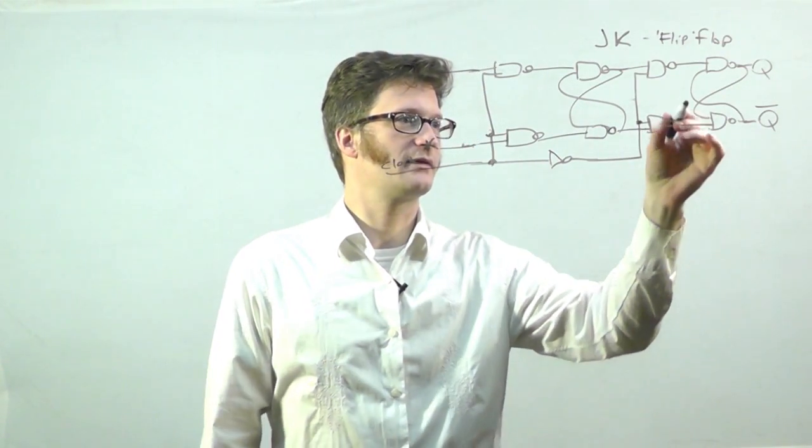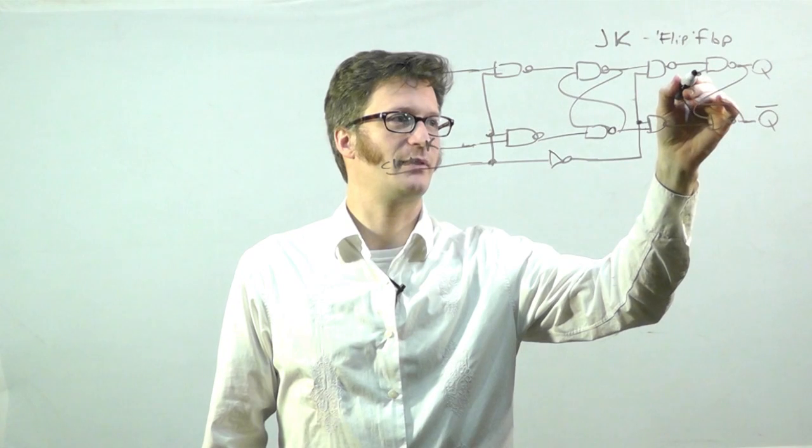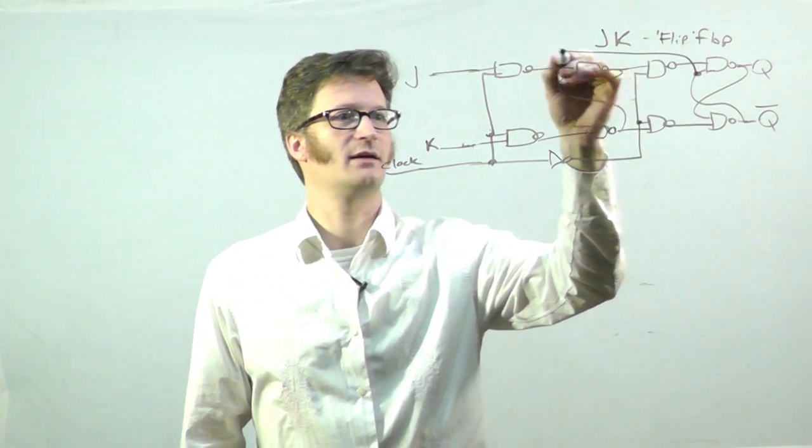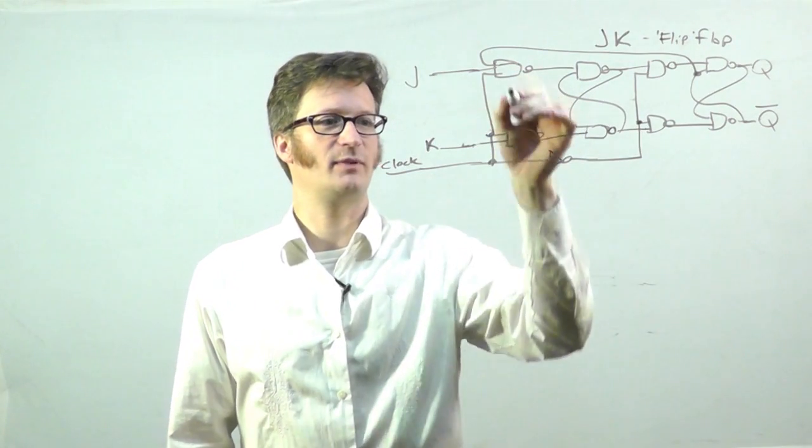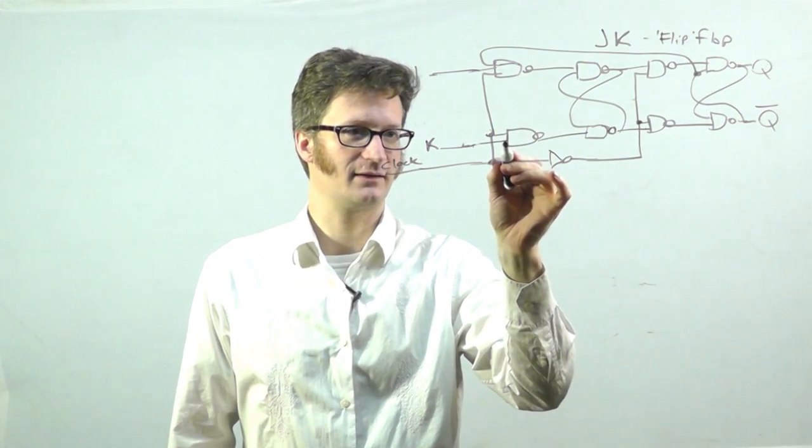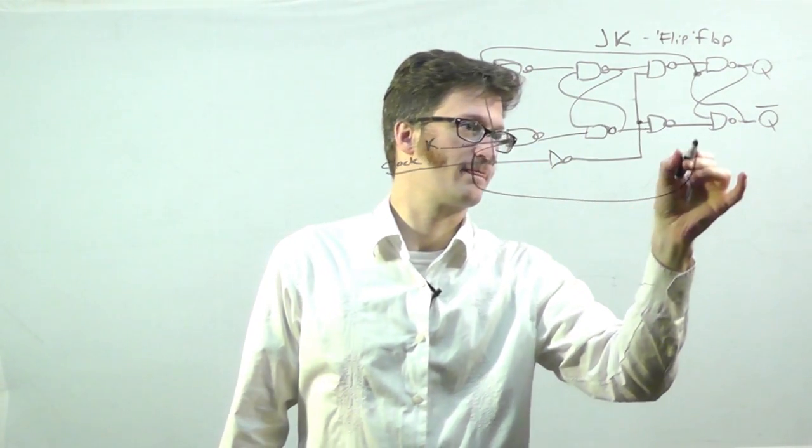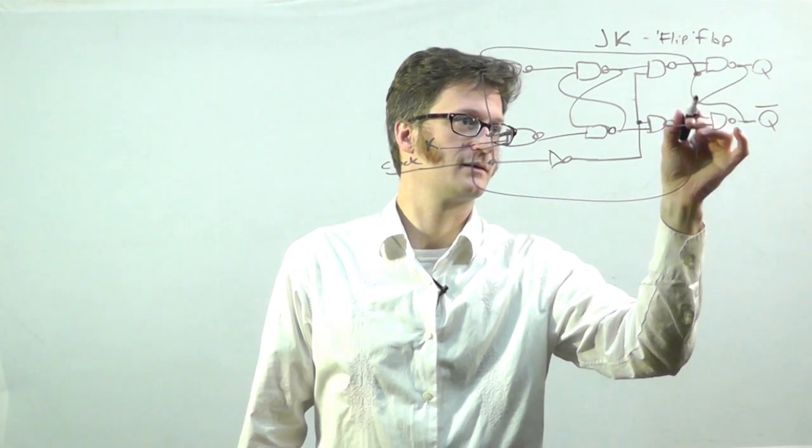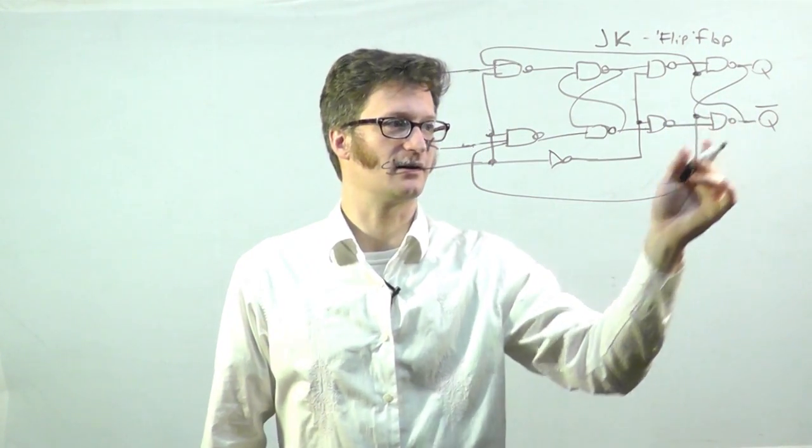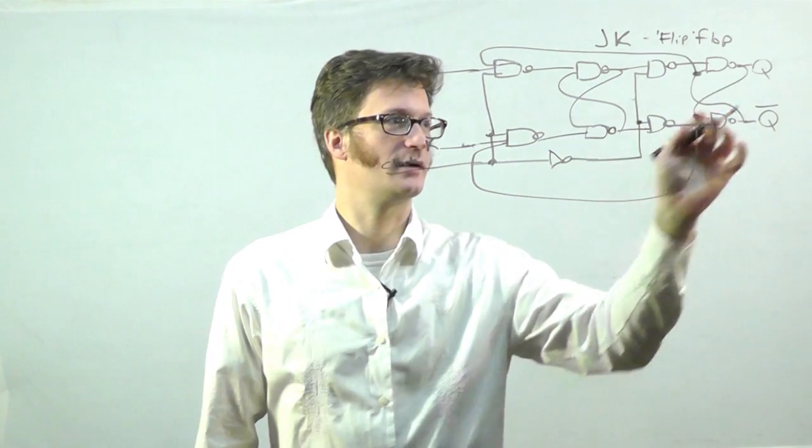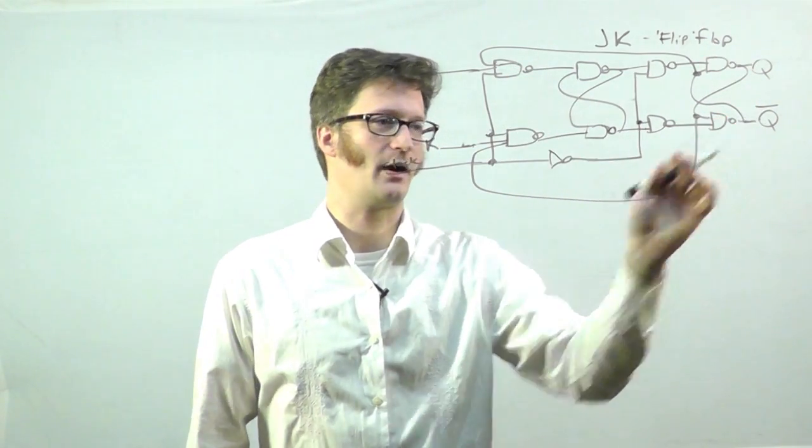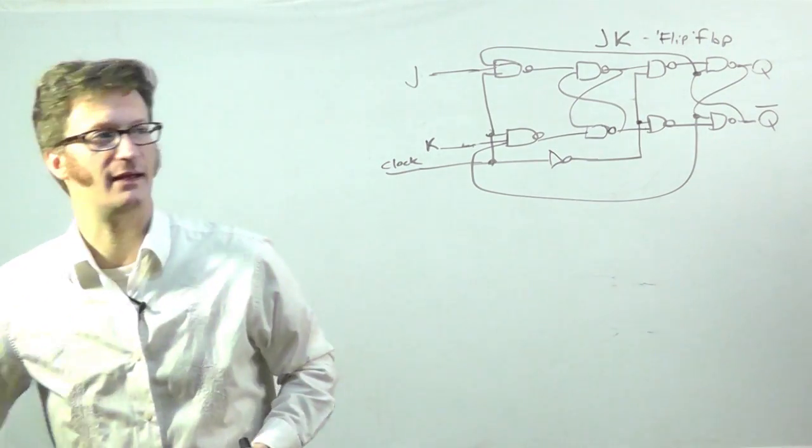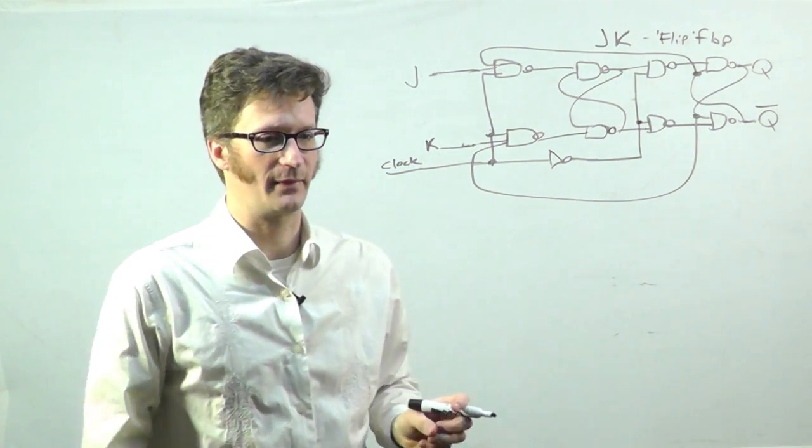Then the other thing that we're going to do is we're going to tap in and cross-couple things so that these become three-input NAND gates. And they're attaching here. So essentially, this one is connecting to the output of that one, and this one is connecting to the output of that one. And so that creates a JK flip-flop.